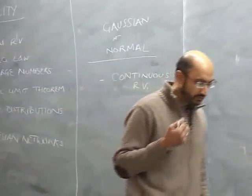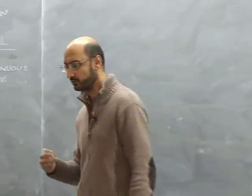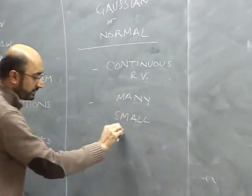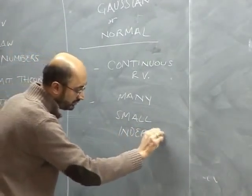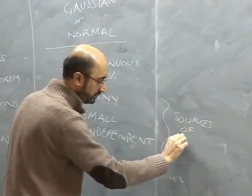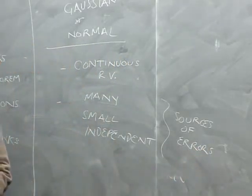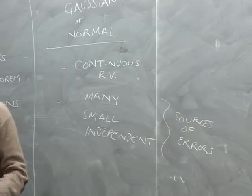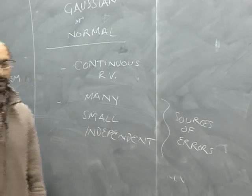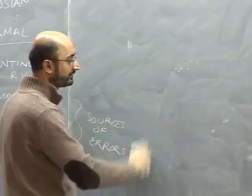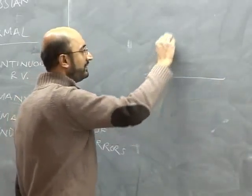In many cases we find that the normal distribution shows up, and the reason for it is the central limit theorem. It shows up basically when you have many, small, and independent sources of errors — all three must be true. If you have just one source of error, you don't get balancing around a central point. If the errors are not small or not independent, you can have correlations. But with many small independent errors, it's like a trembling hand trying to make a dot — you go here, you go there, but it has a distribution.